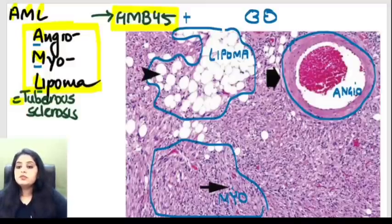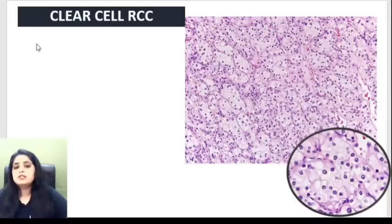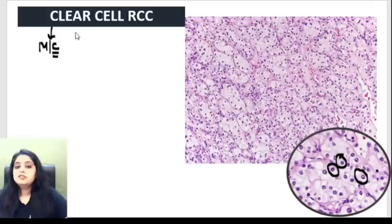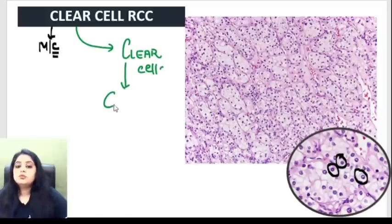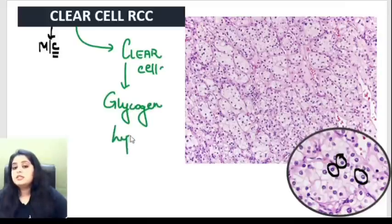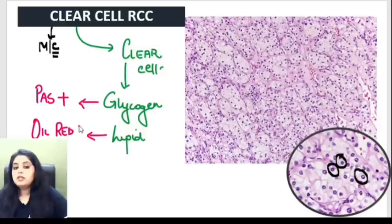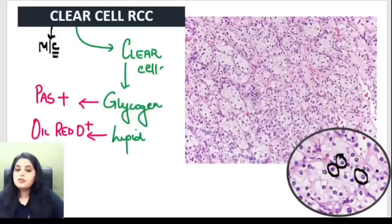Now moving to malignant tumors. The most common malignant kidney tumor is clear cell RCC. The cells are extremely clear — completely white on microscopy. Why are the cells clear? They contain glycogen and lipid. The stain for glycogen is PAS, and the stain for lipid is Oil Red O. So clear cell RCC is positive for both PAS and Oil Red O.